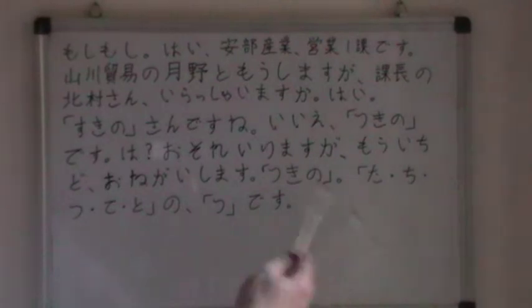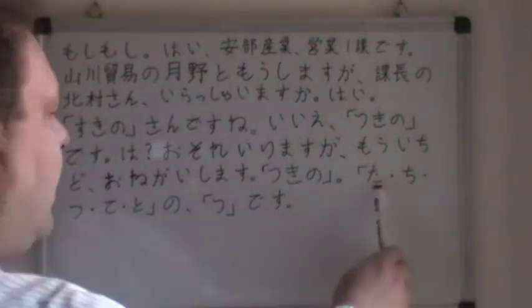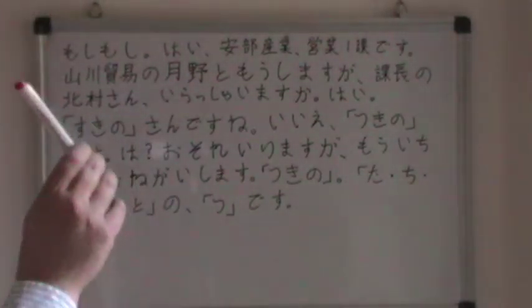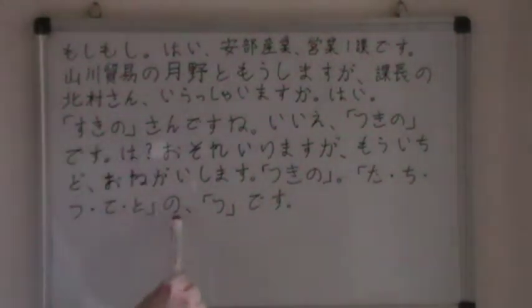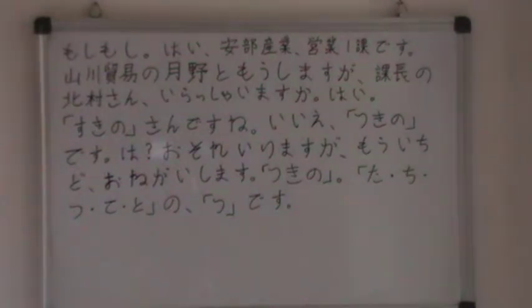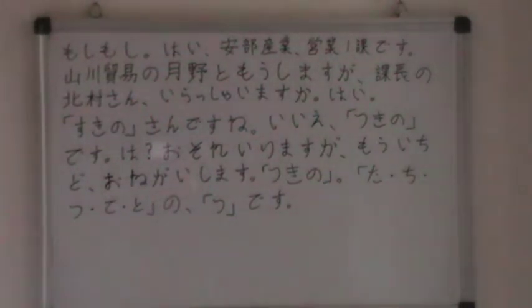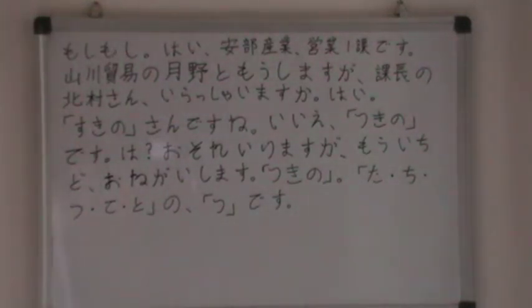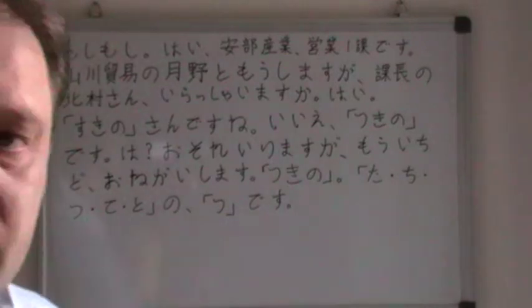Tsukino — so he repeats his name. Tsukino. Tachitsuteto-no — of that row. Tachitsuteto — the Tsuu. Des — it is. So it's the Tsuu of Tachitsuteto. That's one way how you can spell things in Japanese.